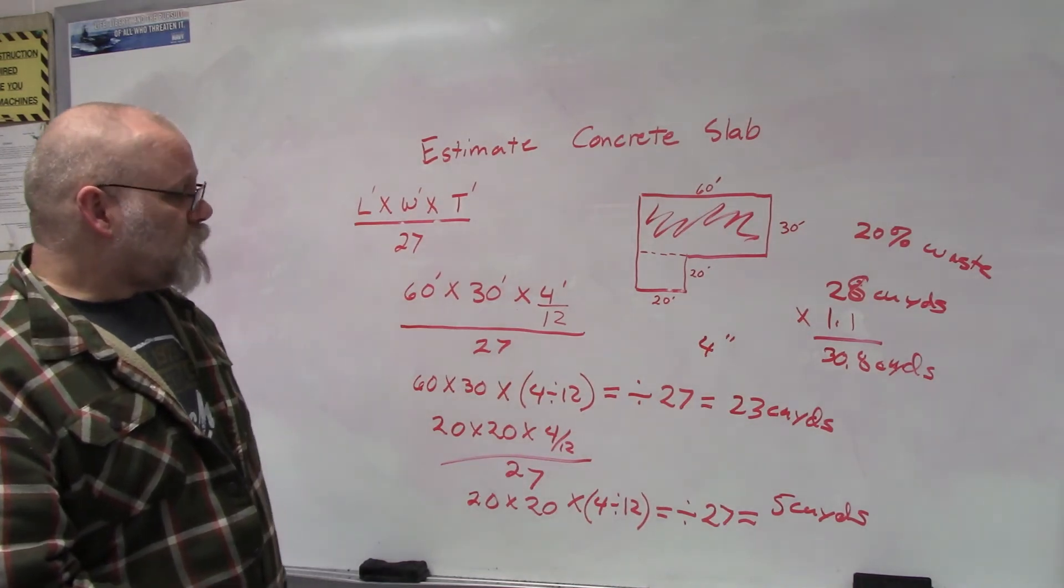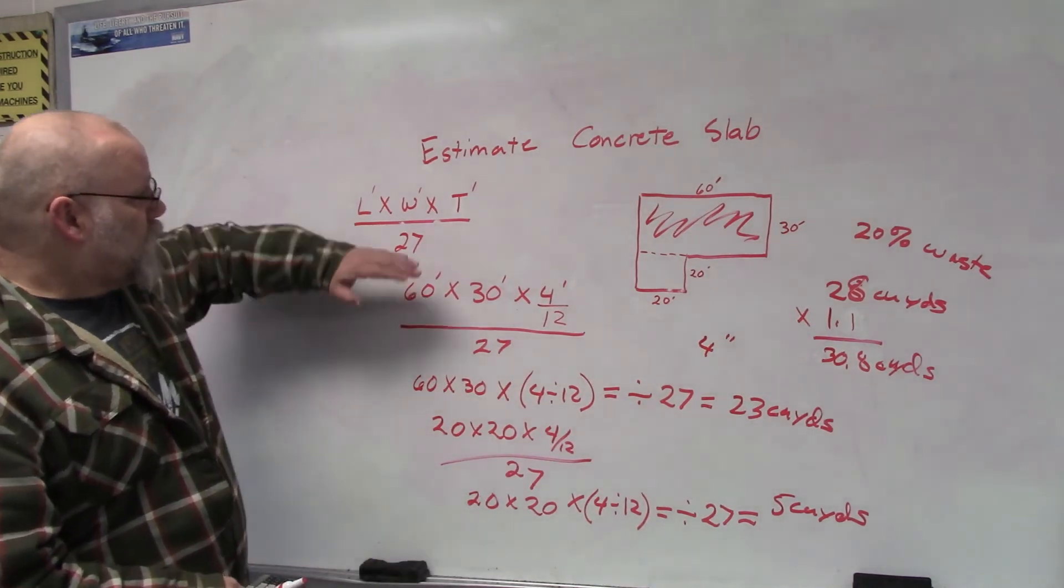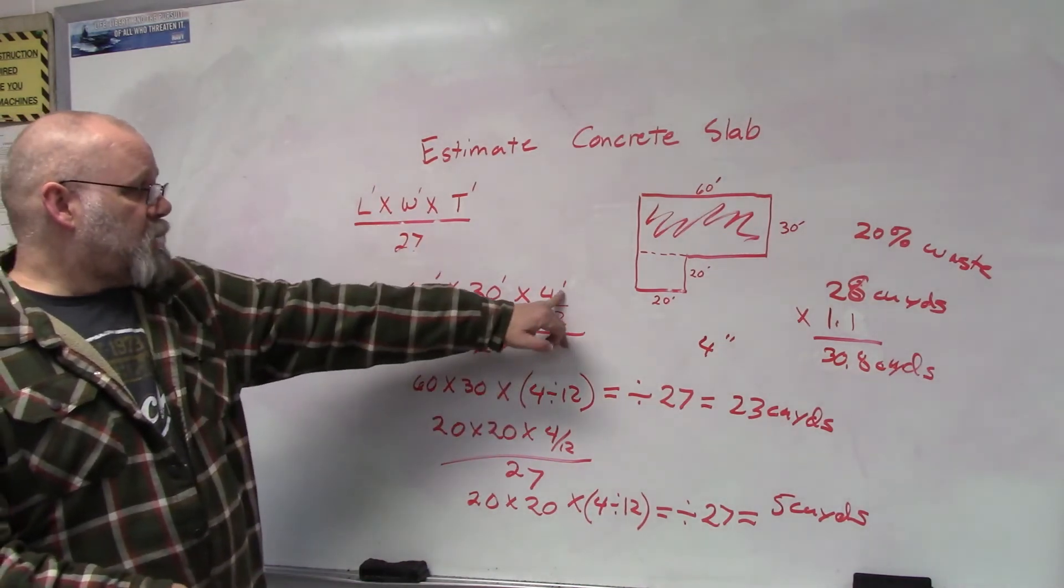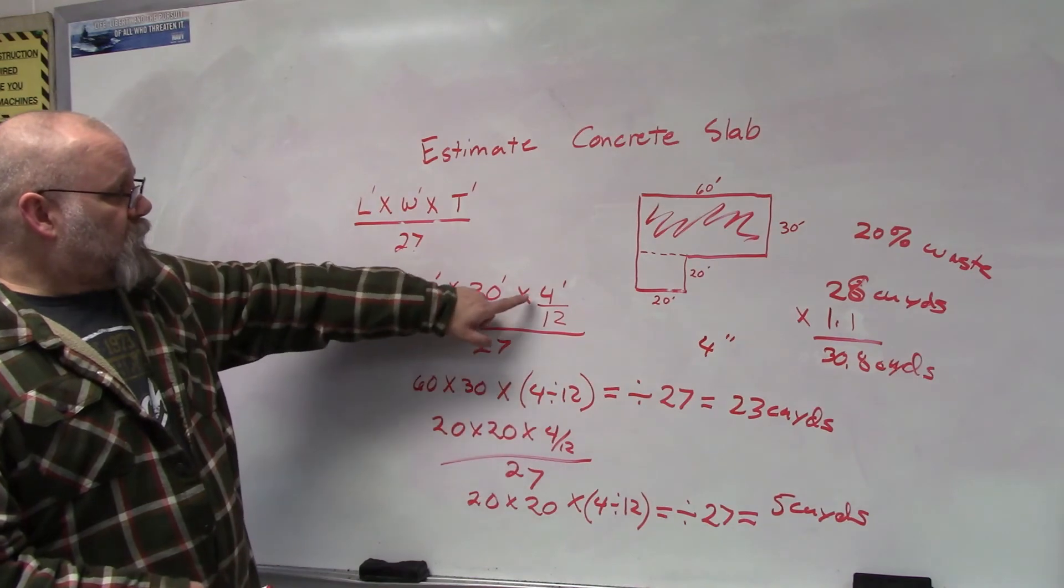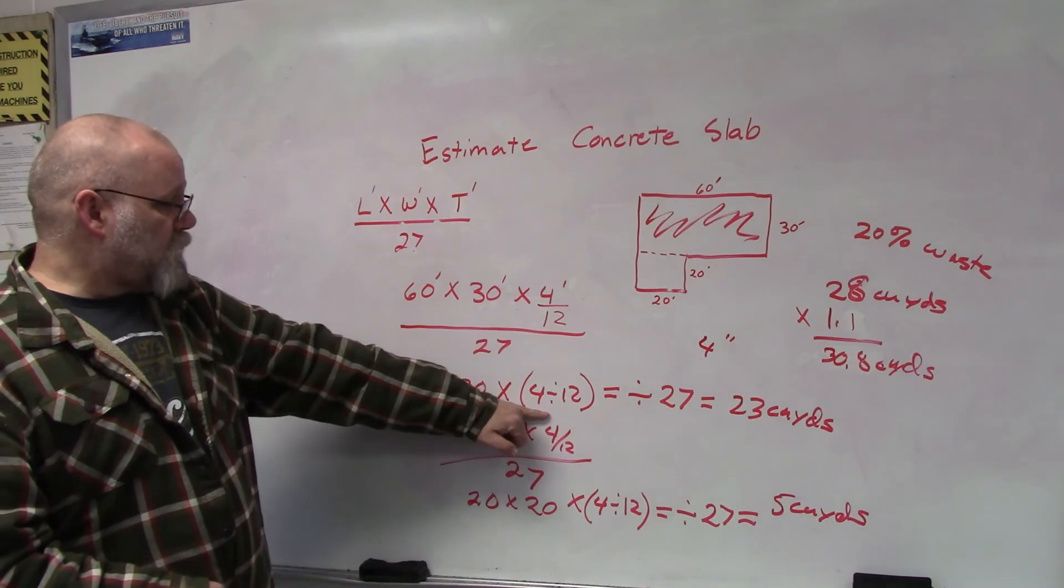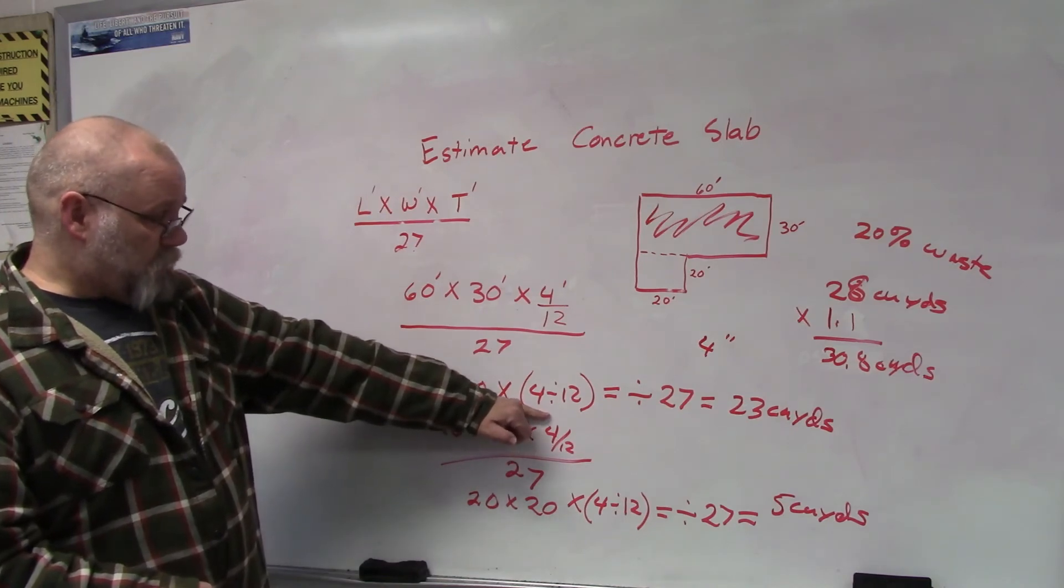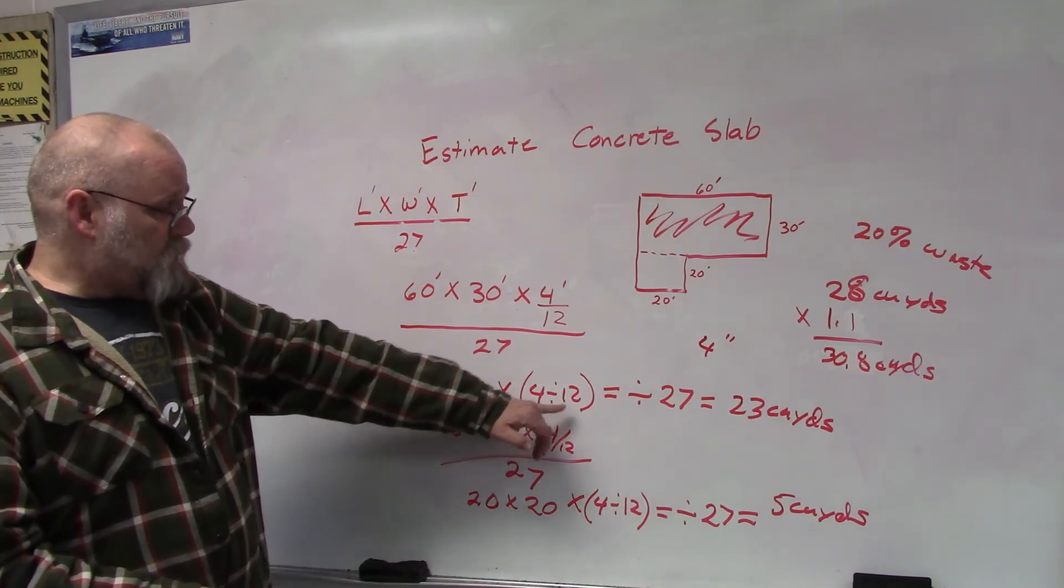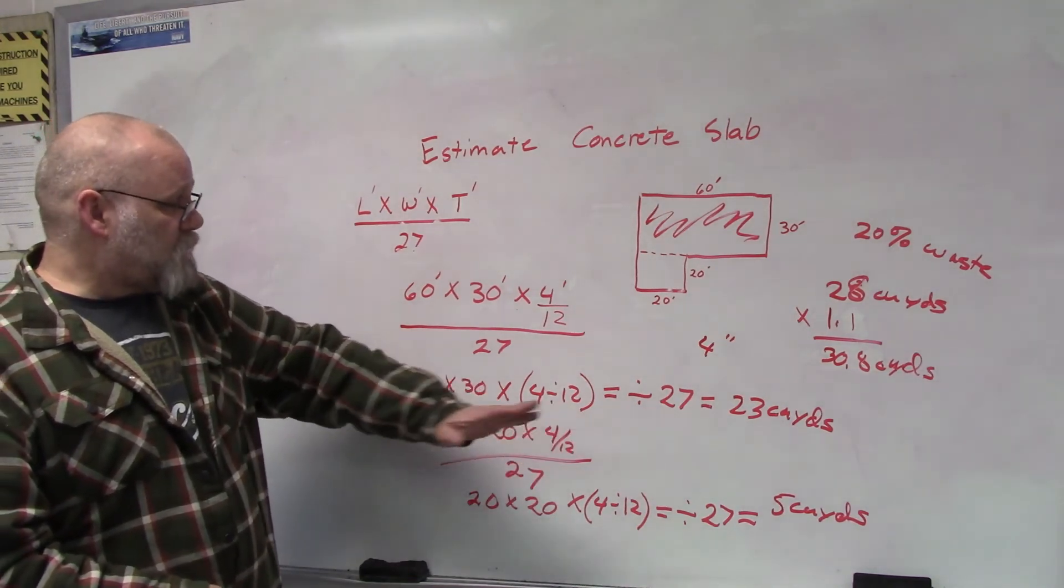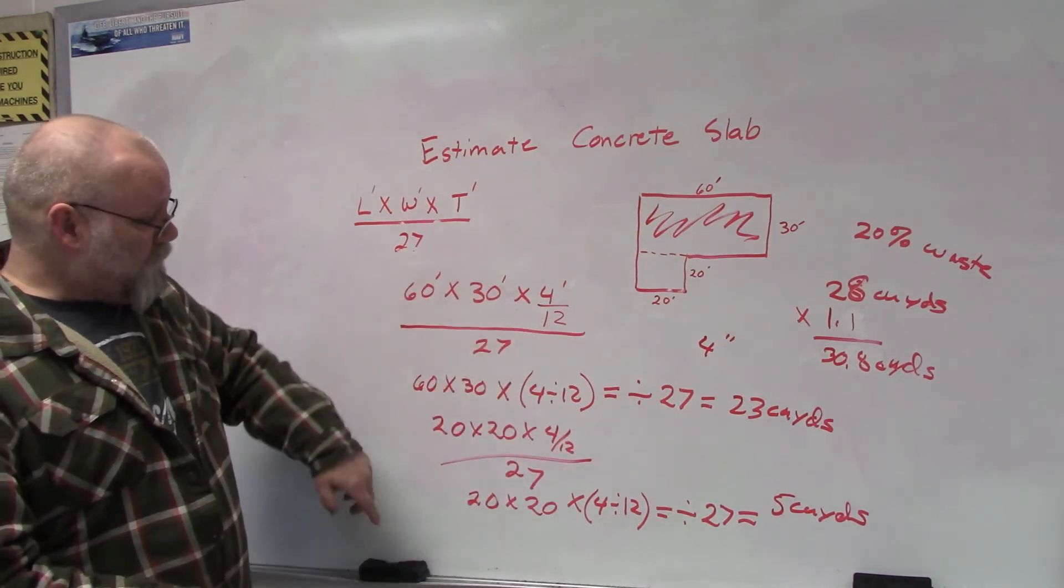So this equation will work for rectangles. Remember, you convert everything into feet—convert inches into feet, all you have to do is put it over 12. And then when you put it into your calculator, just put parentheses around it because it'll do what's inside the parentheses before it does what's outside. So that would be 4 divided by 12, which is what a fraction is—a division. Make sure you hit equals and then you're going to divide by 27.